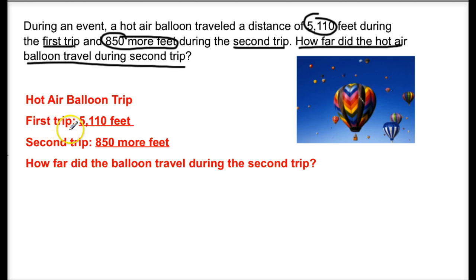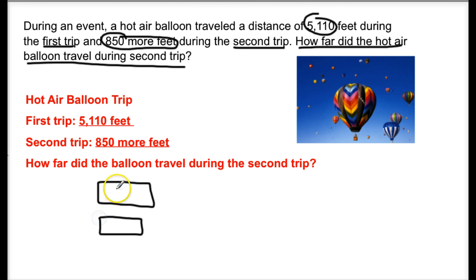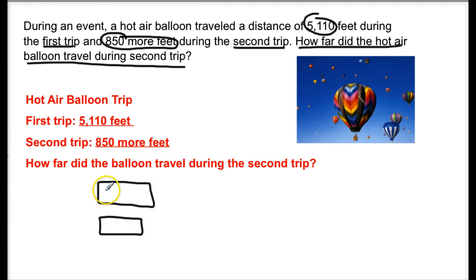So our information includes the first trip and the second trip, and now we're going to create our bar models to match our comparison problem. We know we're going to have two separate bar models, and the top bar model is going to be larger than the bottom one. The larger value is going to be the second trip, so I need to label this bar model 'second trip.'